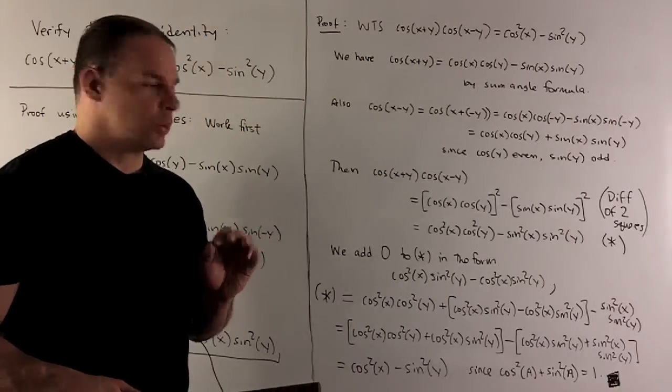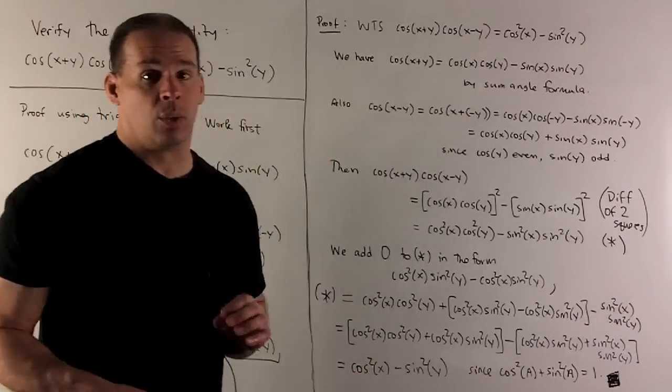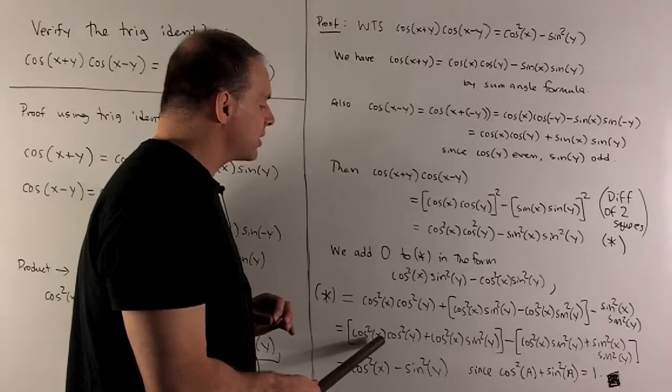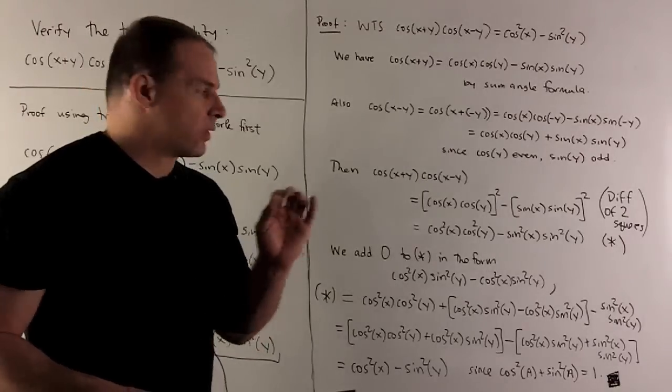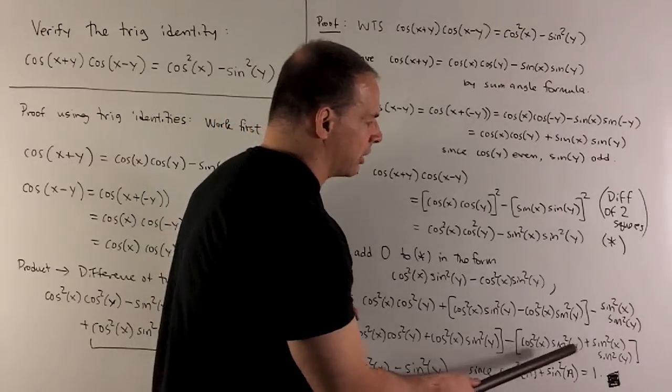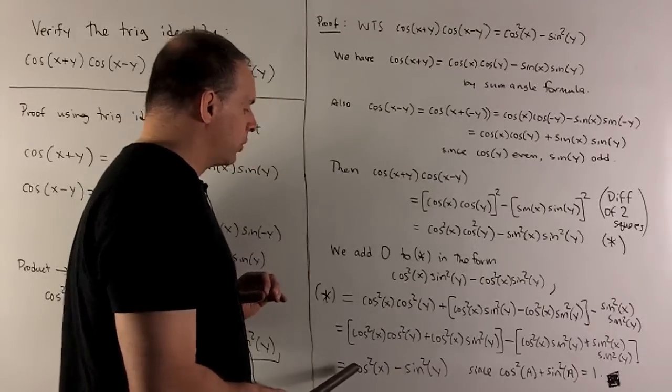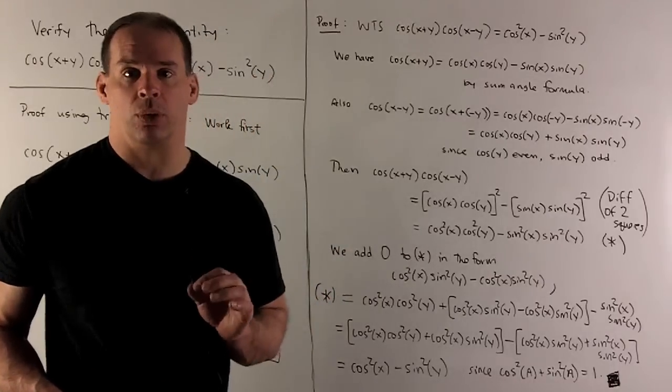Then, to finish, we just note, okay, if I take cosine squared of an angle plus sine squared of an angle, we get one. Okay. Over here, we can factor out a cosine squared x. We use this with cosine squared y plus sine squared y. Then, on the other one, we have cosine squared x plus sine squared x. So, these are going to collapse to cosine squared x minus sine squared y, which is what we were trying to prove.